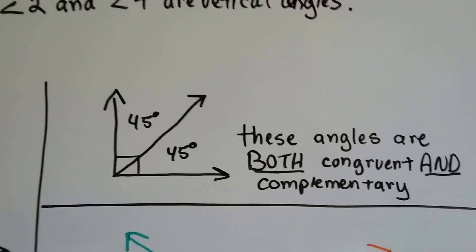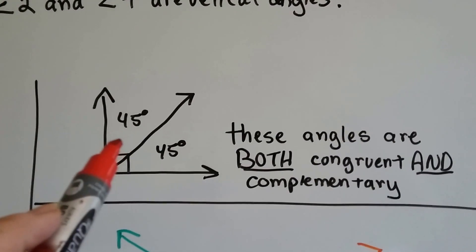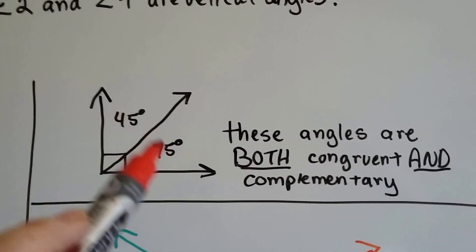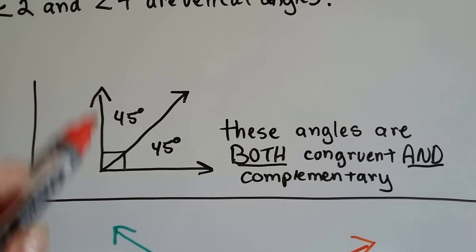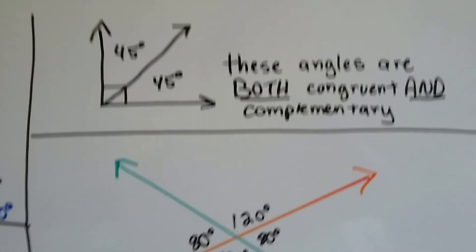And we can have angles that are both congruent and complementary. These are both 45 degrees and they're complementary. They equal 90 degrees.